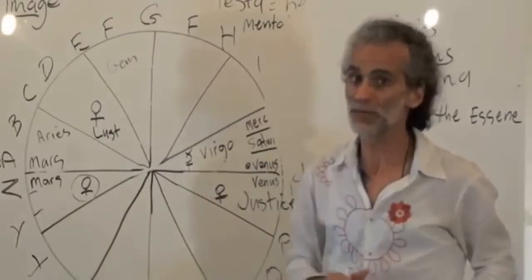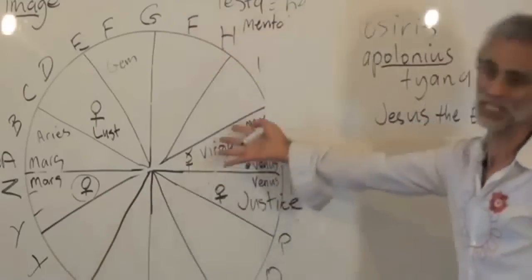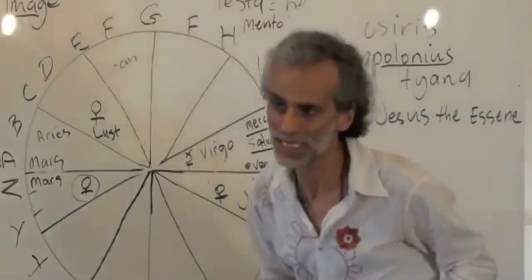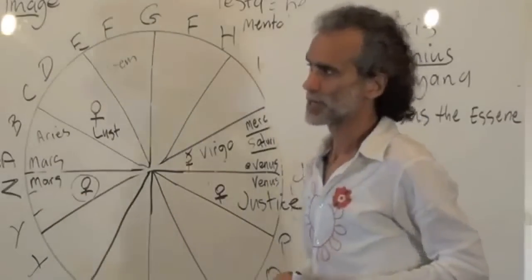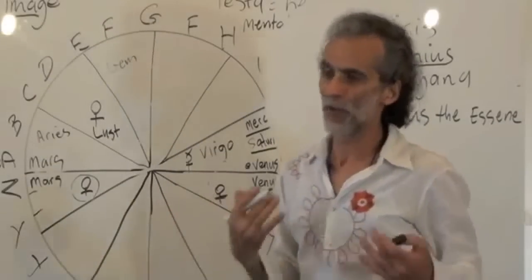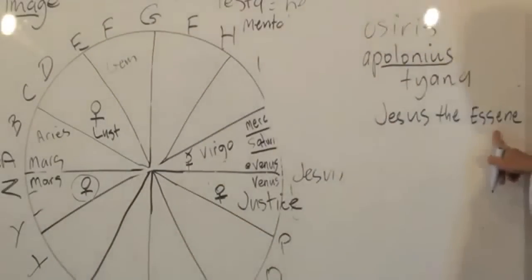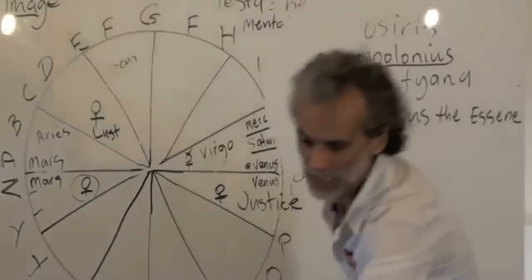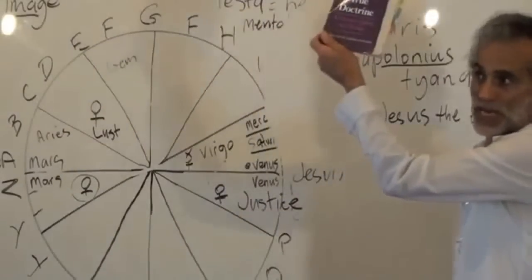Freemasons believed that there was a Jesus, but this is Freemasonry. But they absolutely subscribe to a historical Jesus. Because if there was Jesus the Essene, Jesus Ben-Panthera, as Celsus tells us 2,000 years ago,